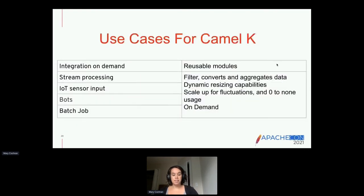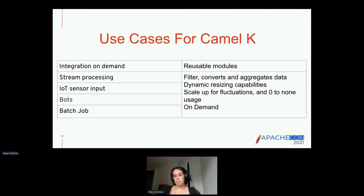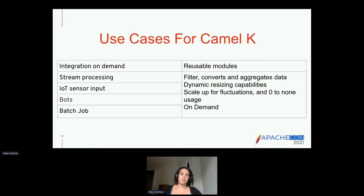Some use cases for Camel K are integration on demand, which fits very well with serverless — when you need something to dynamically scale up and down with that on-demand aspect. Or if you have a batch job that runs once a day and doesn't need to run all the time, that's a great use case for Camel K. You still have the ability to have reusable modules, do stream processing, IoT, and all sorts of other use cases.